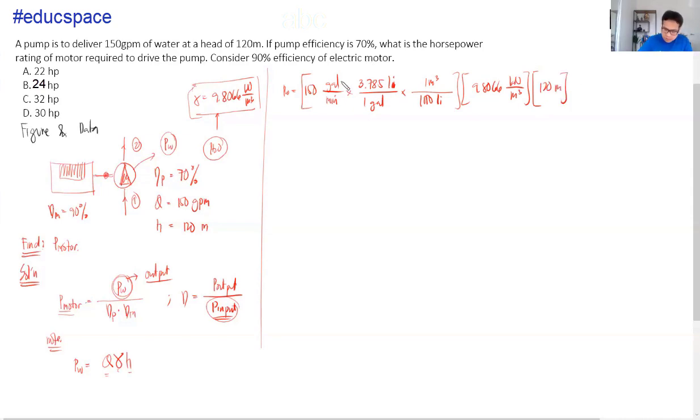Unit analysis tayo, guys. Gallons will cancel out. Liters will cancel out. And then, take note, may minute pa pala tayo dito. So, we have to convert this into seconds. So, 1 minute is given to 60 seconds. This will also cancel out. And then, cubic meter, mga cancel. And then, kilonewton meter is kilojoule. Kilojoule per second is kilowatts. So, yan yung magiging unit natin. This must be in terms of kilowatts.